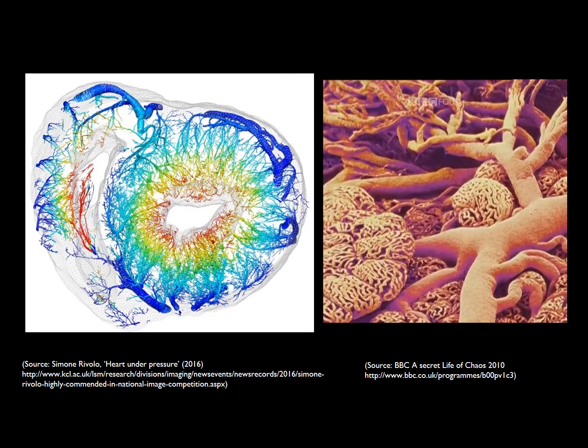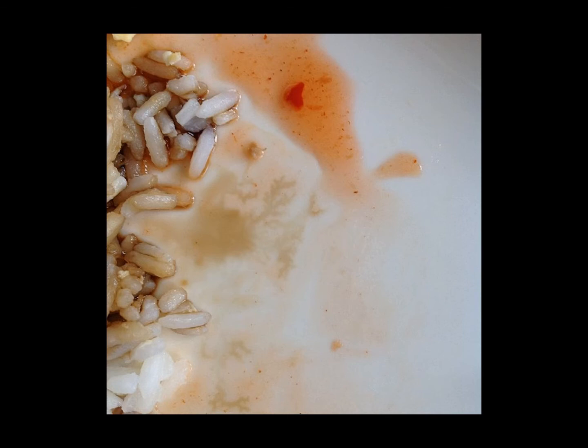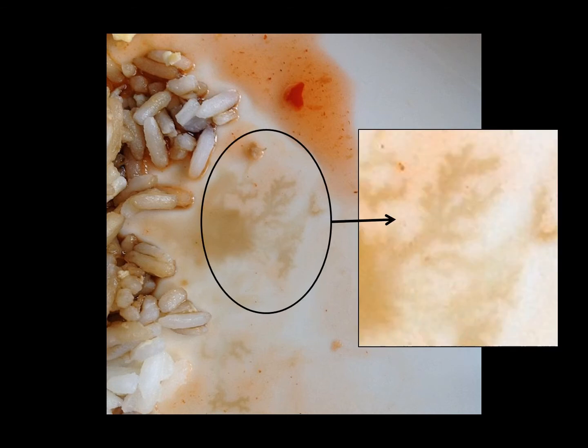Fractal branching patterns can be seen at smaller scales too. Here we have the vasculature of the heart on the left and of the microvasculature in a kidney on the right. Once you're aware of fractal shapes, you'll start to see them everywhere. This is a plate of my food which includes rice, soy sauce and chilli sauce. As I was eating, I was drawn to this branching fractal which formed the interface between soy sauce and chilli sauce, probably because of an interaction between the components of those foodstuffs.